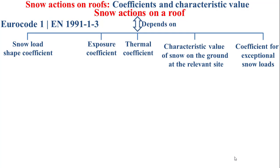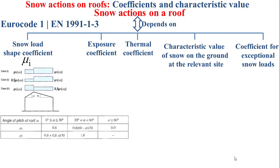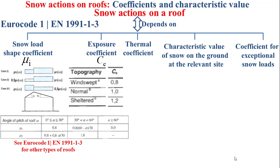The snow load shape coefficient is denoted by the Greek letter μi and it's determined, for example, for a duopitch roof based on the figure and the table that you see now in this slide. For other types of roofs such as monopitch roof, cylindrical roof, or multi-span roof, you can refer to EuroCode 1 standards. The exposure coefficient is denoted by CE and is determined depending on the topography based on the table in this slide — for normal topography, CE equals 1. The thermal coefficient is denoted by CT and equals 1 as a recommended value, except for some glass-covered roofs.